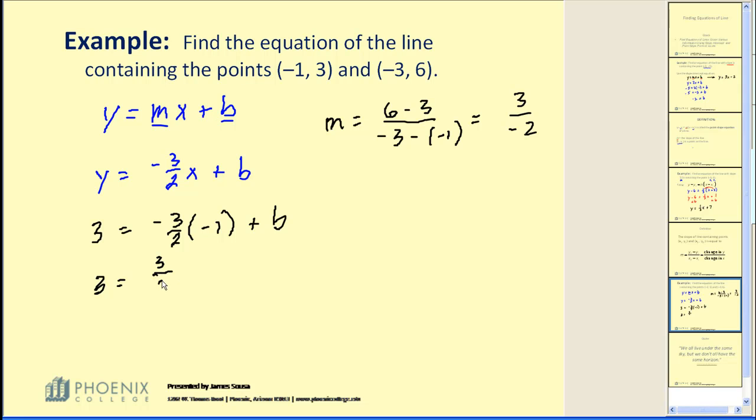This would be a positive 3/2. So subtracting 3/2 on both sides, 3/1 minus 3/2. Three over one is the same as 6/2. Six over two minus three over two would give us 3/2 for our y-intercept. We just need to put all the pieces together. We could take this equation here, it's missing the value of b, and replace it with positive 3/2.